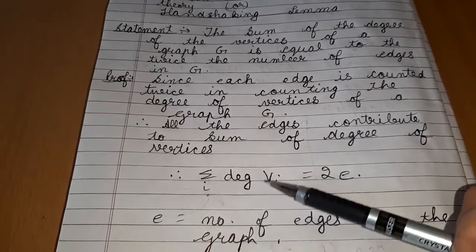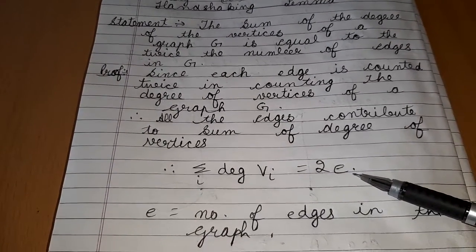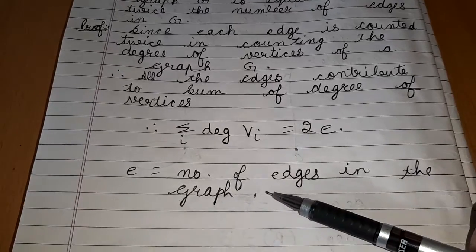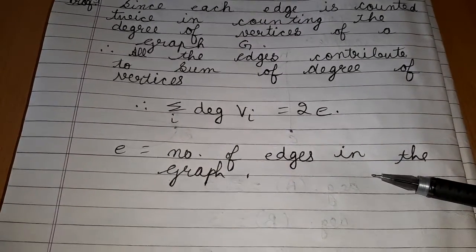Therefore, summation degree of V equals 2 times E, where E is the number of edges in the graph.